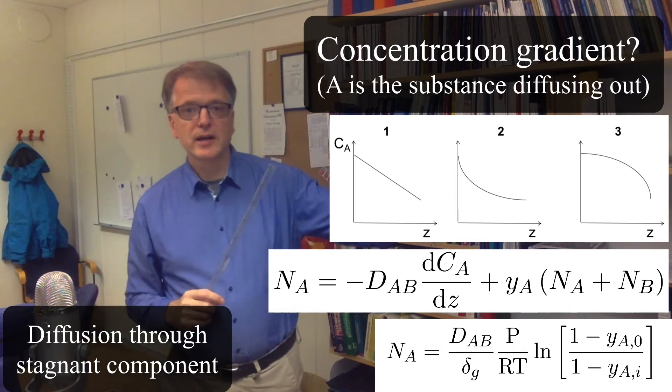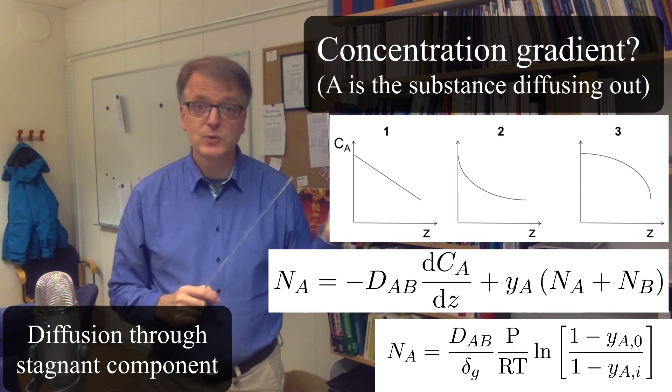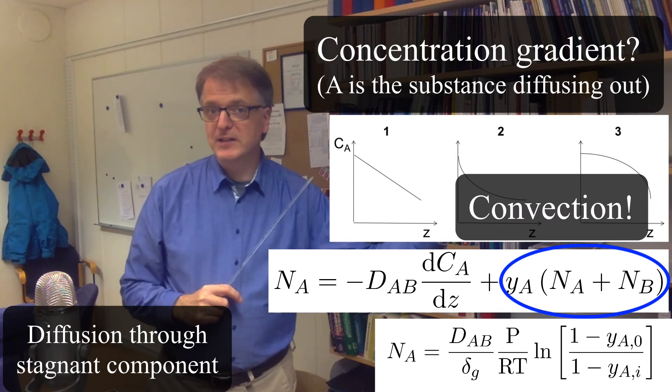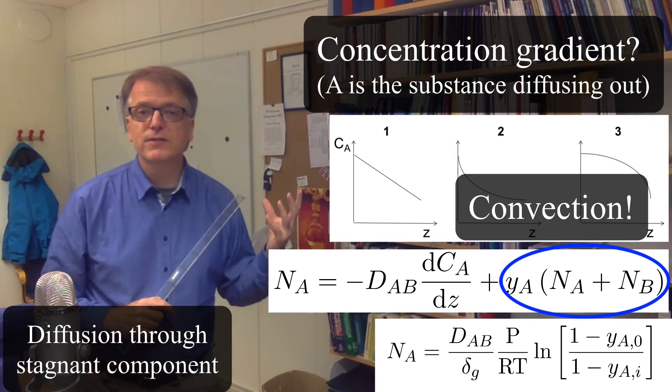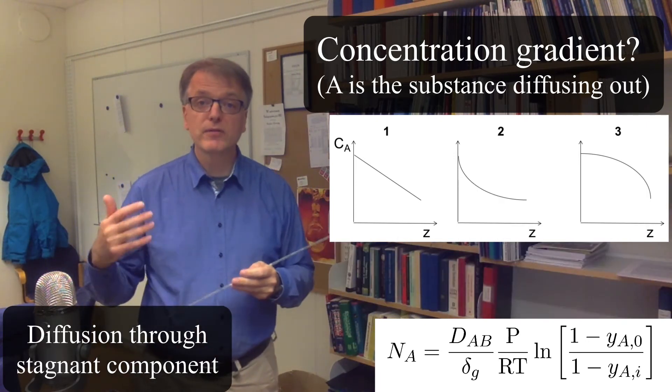Because remember the equation we had in the beginning, the yA times something, which in this case becomes yA times Na alone—that's the convective part. And the other part is the diffusive part. So we have both convection and diffusion.